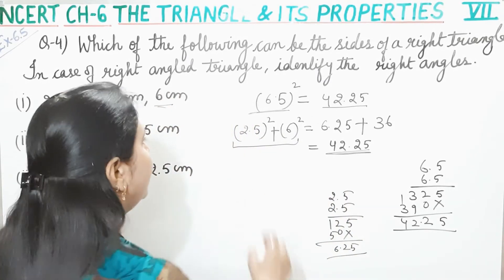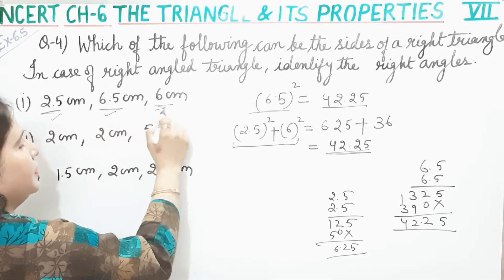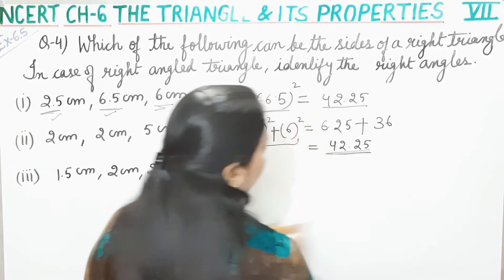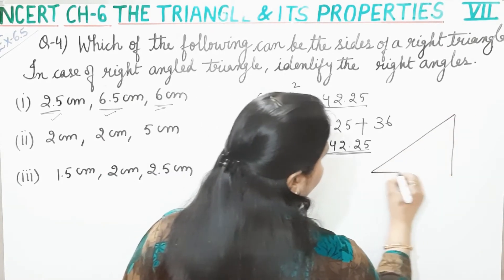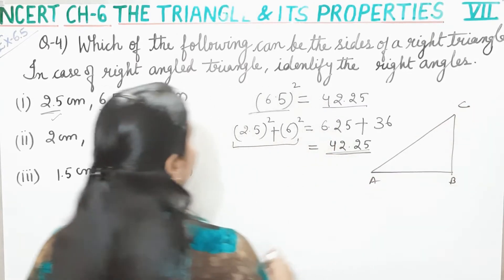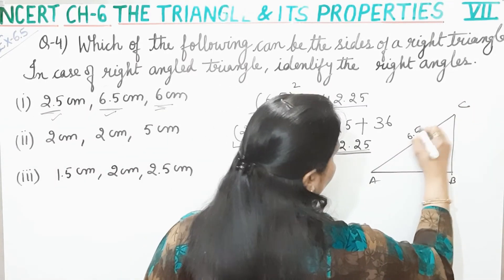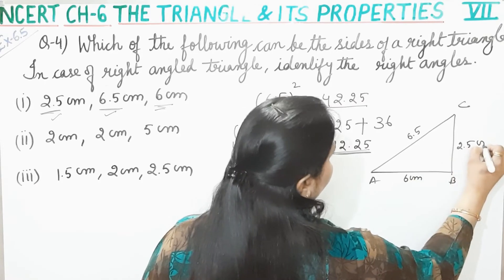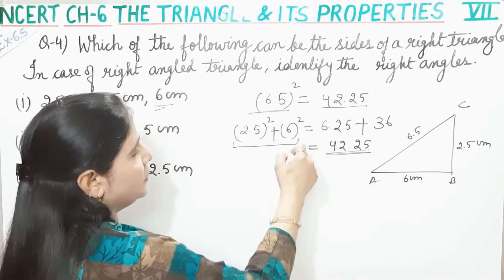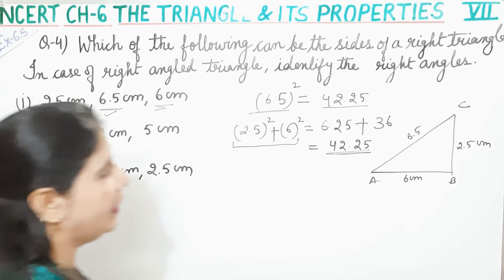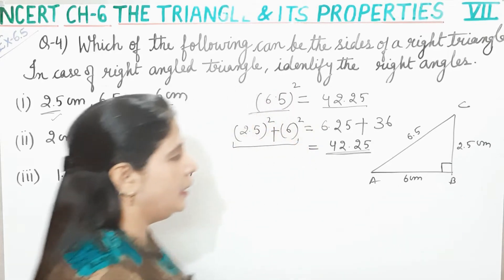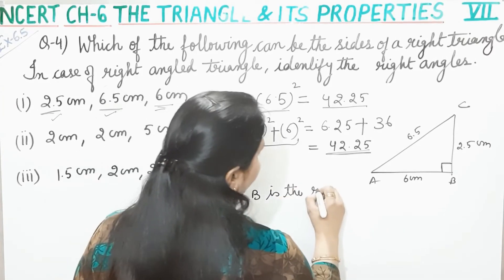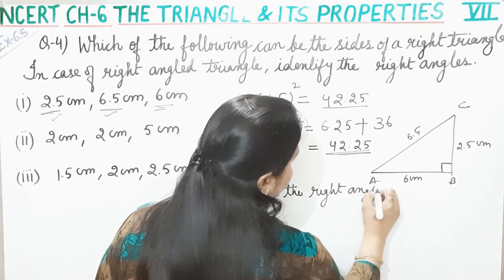Yeh dono barabar hain. It means ki ye jo sides hain — 2.5, 6.5, 6 — ye right triangle ki side ho sakti hain. Toh ab hum ek right triangle banayenge: triangle ABC. Toh longest side kaun si hogi? 6.5. Yeh 6.5 hai, yeh 2.5 hai, aur yeh 6 cm hai. Toh humara right angle B pe ban raha hai. Angle B is the right angle of triangle ABC.